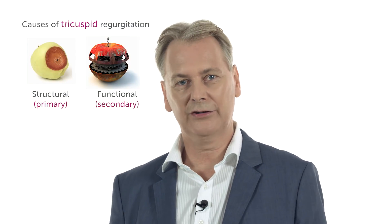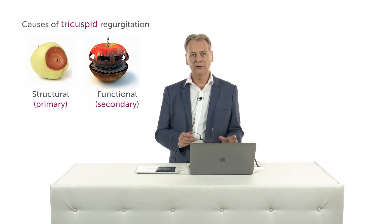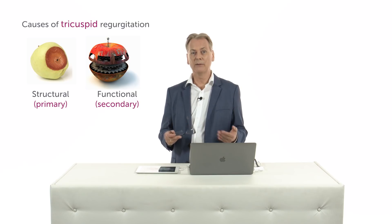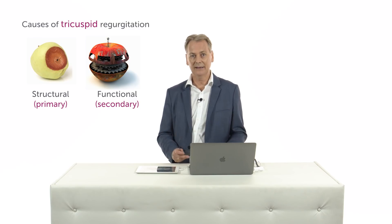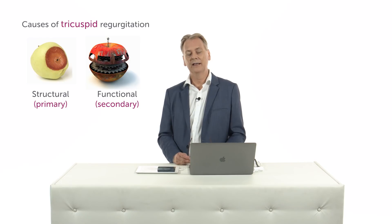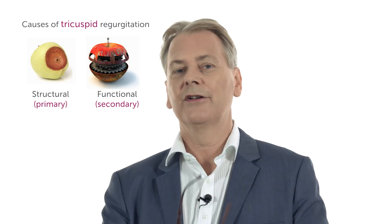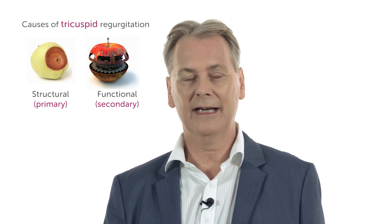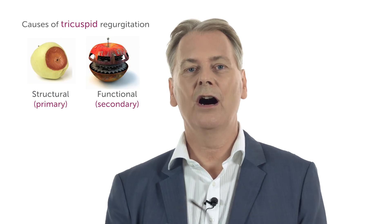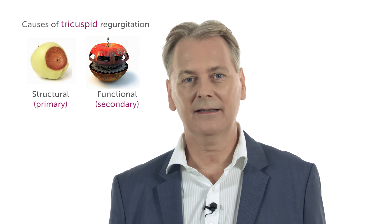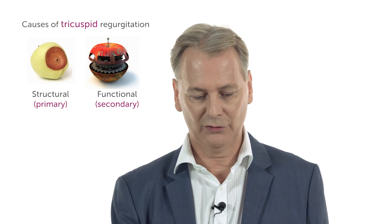We separate the forms of tricuspid regurgitation into structural and functional forms. In structural forms, there is a primary problem — a structural abnormality of the tricuspid valve. In functional tricuspid regurgitation, also called secondary tricuspid regurgitation, there is some change in the geometry of the right ventricle and in the annulus which causes a coaptation defect, and in essence tricuspid regurgitation.